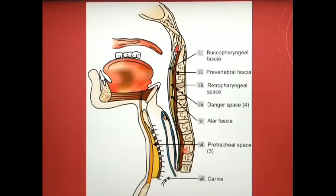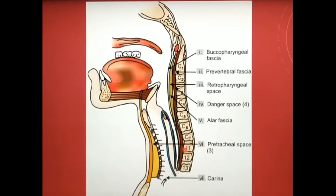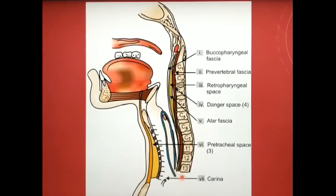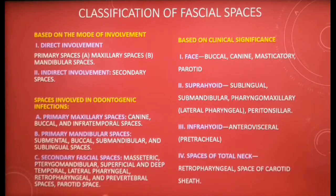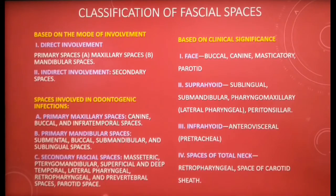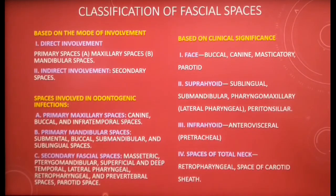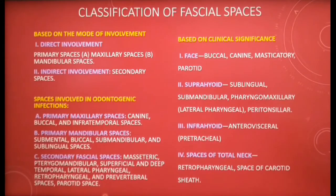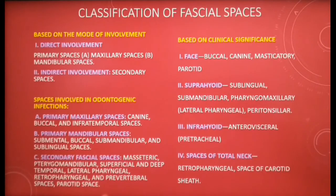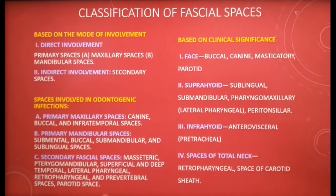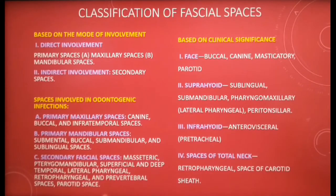Infections of the retropharyngeal space can rupture the alar fascia, thus entering the danger space which is continuous with the posterior mediastinum. Facial spaces can be divided based on mode of involvement into primary spaces with direct involvement and secondary spaces with indirect involvement. Spaces involved in odontogenic infections are classified into primary maxillary spaces, primary mandibular spaces, and secondary facial spaces.